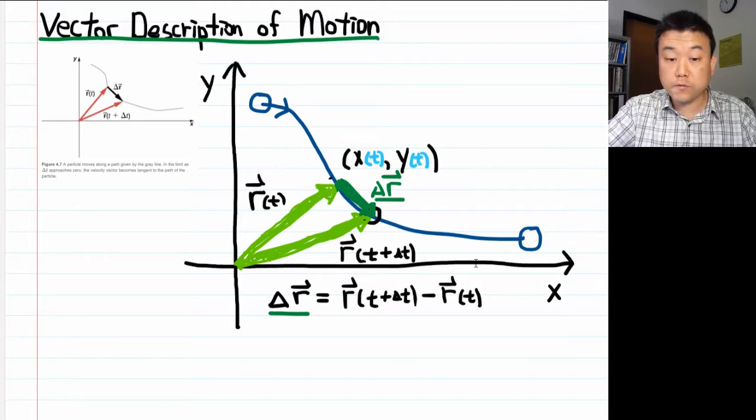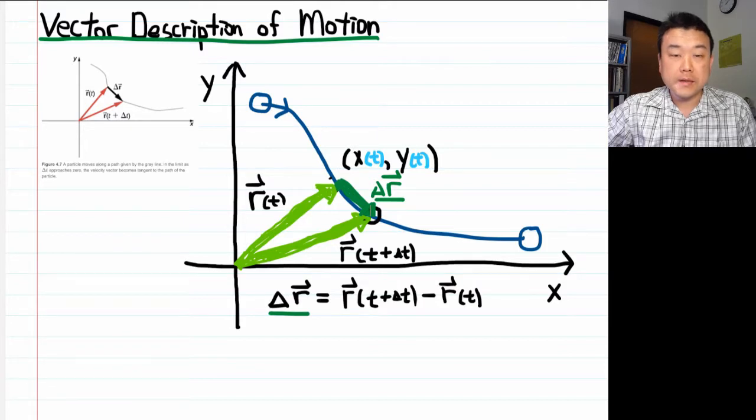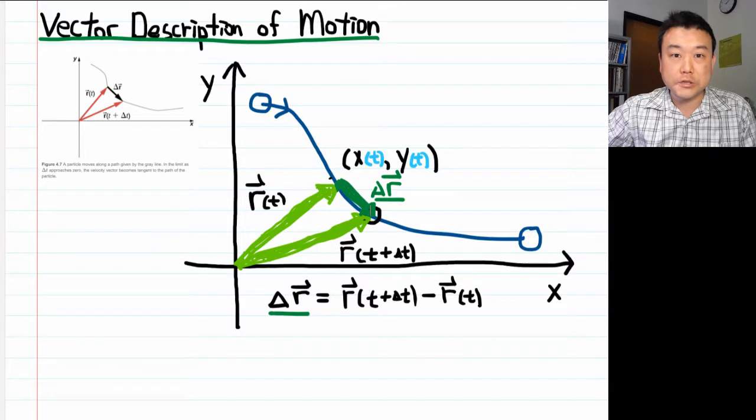As we move the coordinate axis, if we move the coordinate axis, the vector r and the vector r at time t plus delta t are going to change by the same amount. So that constant amount that they change by cancels out. And this delta r, which goes from tip of one vector to the tip of the other vector, remains the same. So with this, let me describe how this simplifies our description of motion.